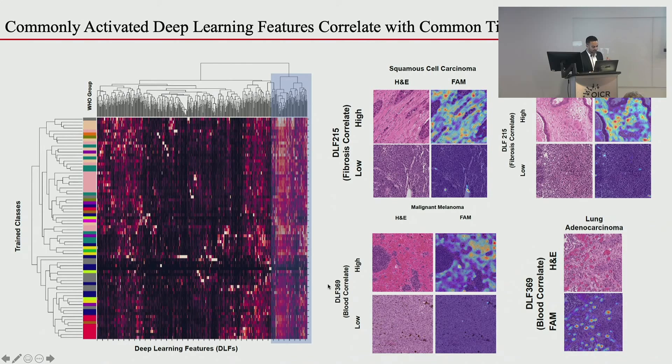Here's another feature, 369, found in practically all classes. For malignant melanoma, the tile with the highest feature 369 value has almost pure blood with some melanoma, while in the low version there's very little blood. So we can correlate feature 369 with blood. And for lung adenocarcinoma, the high-369 tile has small blood vessels, and the feature activation map very accurately labels those small blood vessels in the tumor.